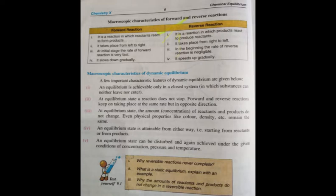Before starting our lecture, I will tell you what is dynamic equilibrium. Dynamic equilibrium is a state of equilibrium in which both the forward and reverse reactions are taking place at the same time. The rate of forward reaction is equal to the rate of reverse reaction. Such type of equilibrium is called dynamic equilibrium.